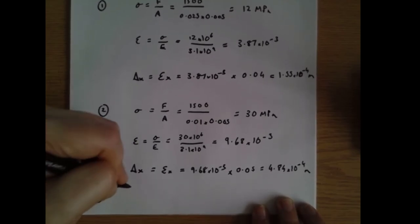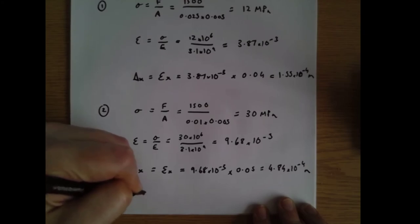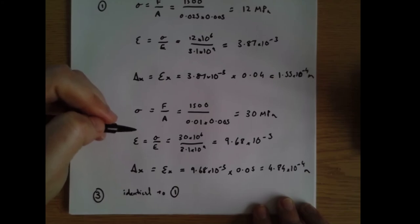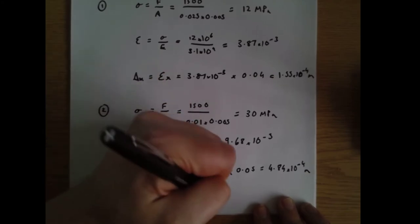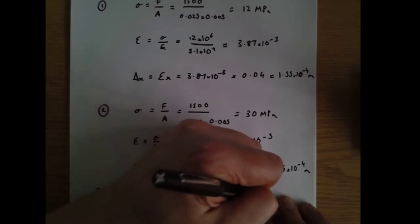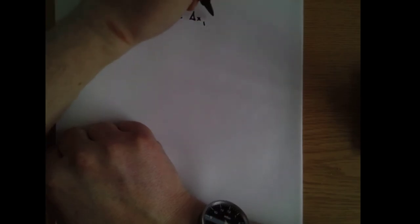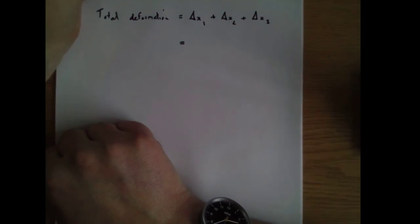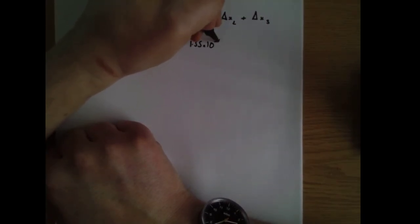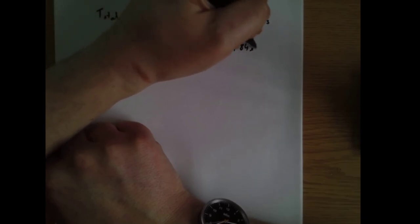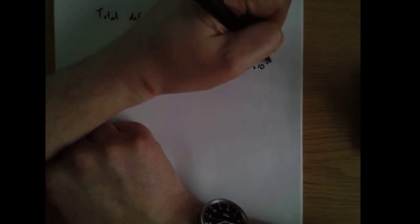Region 3 is identical to region 1, with the same dimensions and force, so delta x equals 1.55 times 10 to the minus 4 metres. Total deformation equals delta x for region 1 plus region 2 plus region 3: 1.55 times 10 to the minus 4 plus 4.84 times 10 to the minus 4 plus 1.55 times 10 to the minus 4.